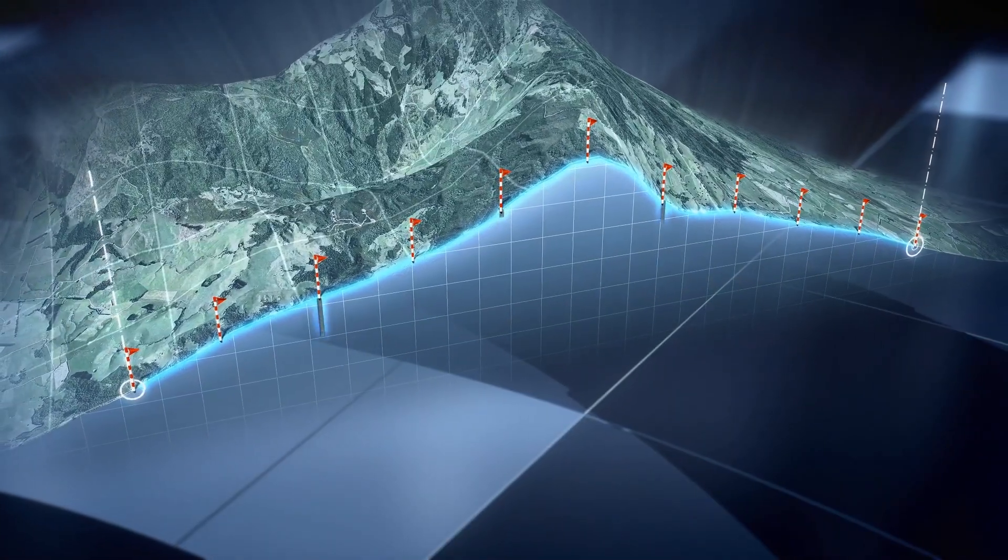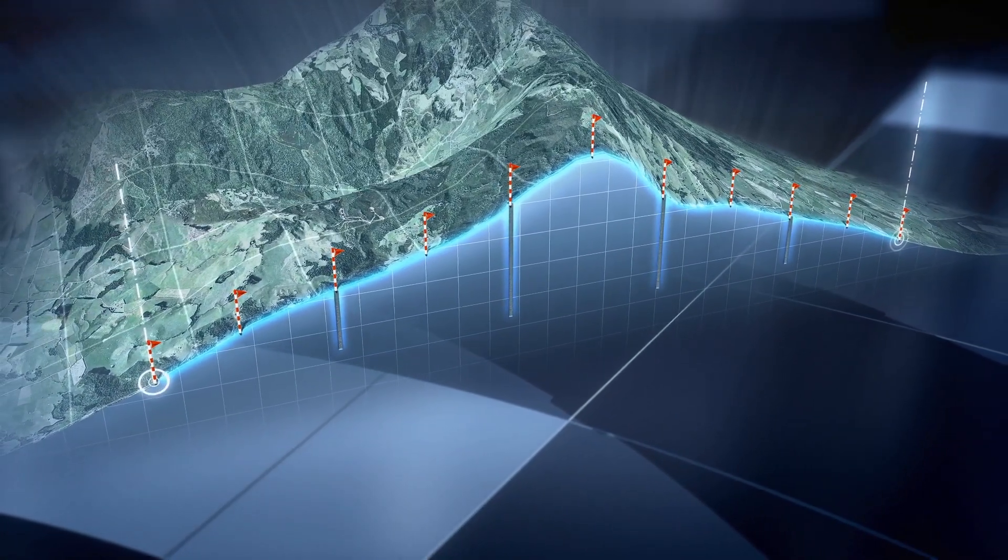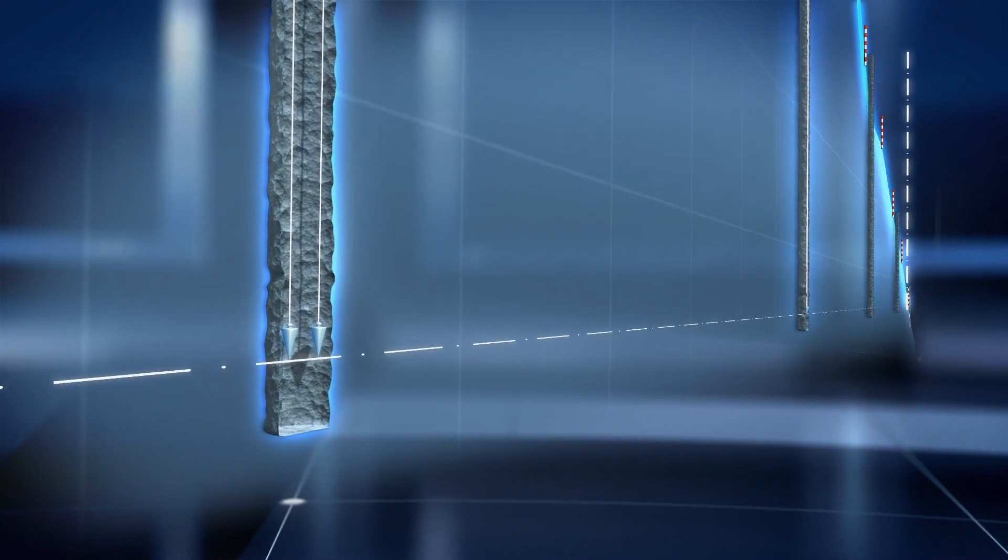When they reached the bottom of the shaft, they dug the tunnel in both directions, following the direction indicated with the help of plumb lines.